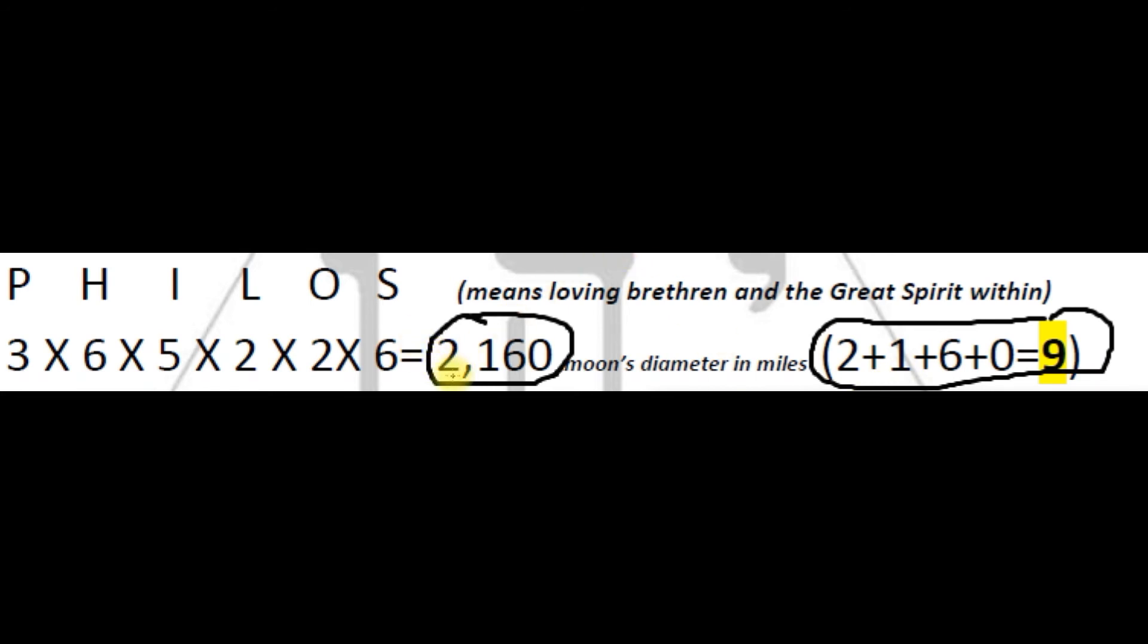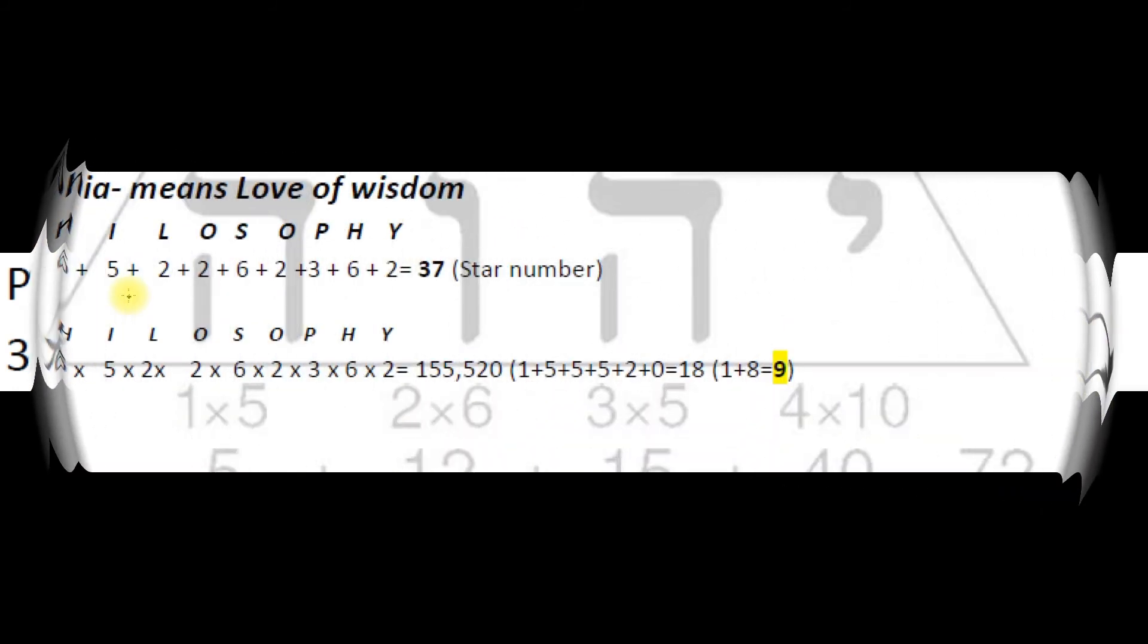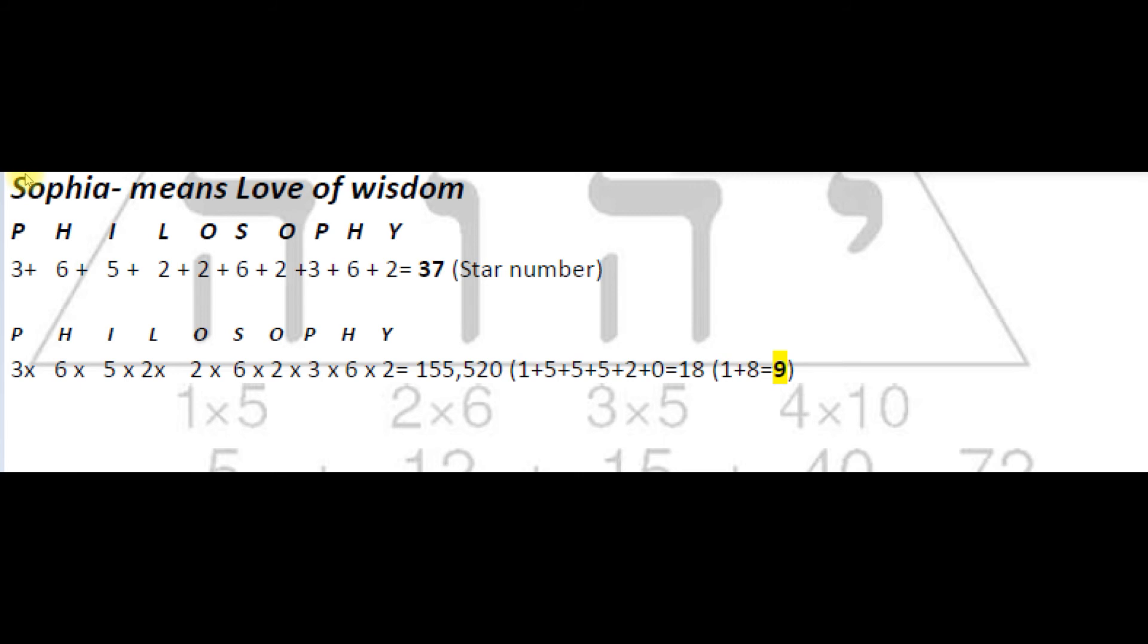Also, 2160 years is one age in the procession of the equinoxes as our earth passes through the 12 constellations of the zodiac. Sofia in Greek means the love of wisdom.